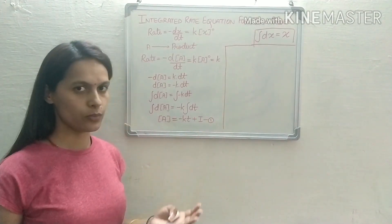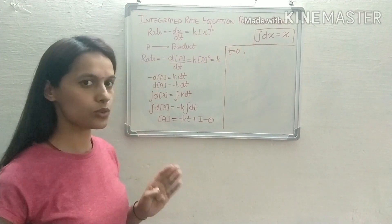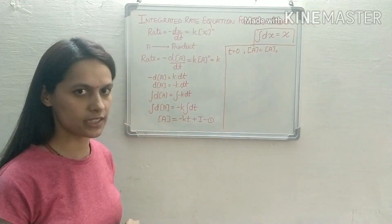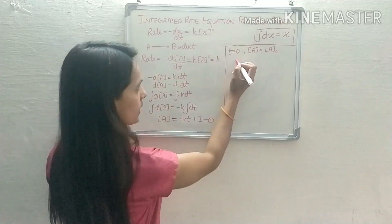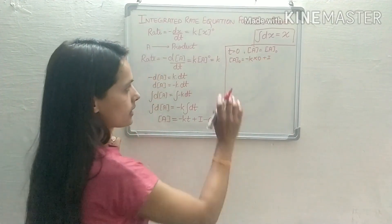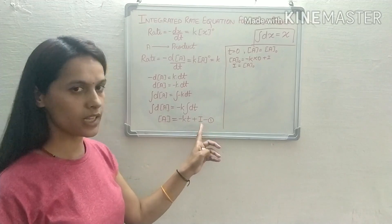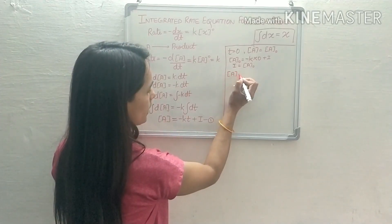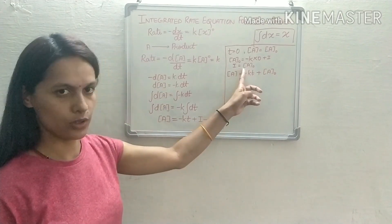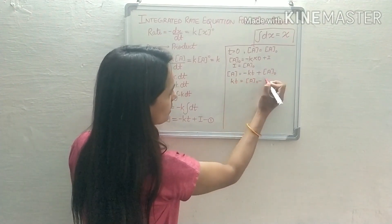Let us consider initial conditions when the reaction started. When t equals 0, A becomes A₀, where A₀ is the initial concentration of the reactant. If we put these two values in our equation, we get: A₀ equals minus k into 0 plus I, so I equals A₀. If we put the value of I back into the equation, we get: A equals minus kt plus A₀. On rearranging: kt equals A₀ minus A.